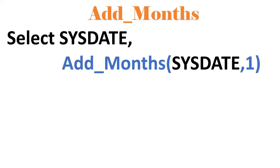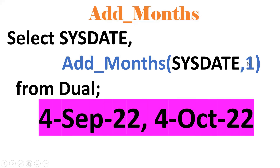ADD_MONTHS concept: if you want to add any months to the current date, we can use ADD_MONTHS. So ADD_MONTHS(SYSDATE, 1) — current date is 4th September 2022, adding plus 1 gives 4th October 2022. If you put minus 1, it will be the previous month — August 4th, 2022.